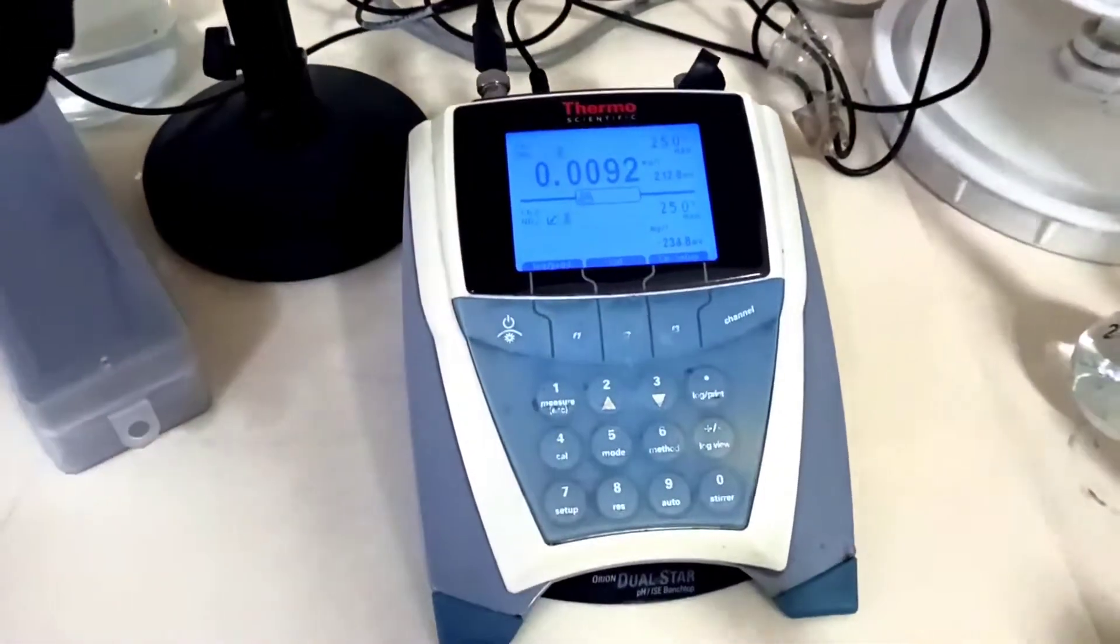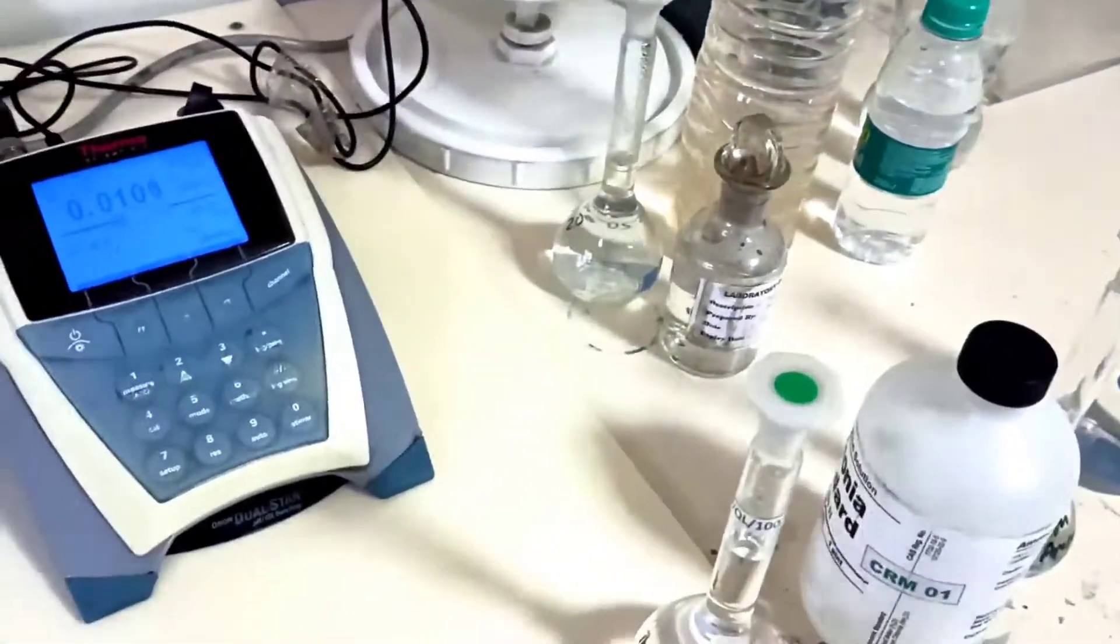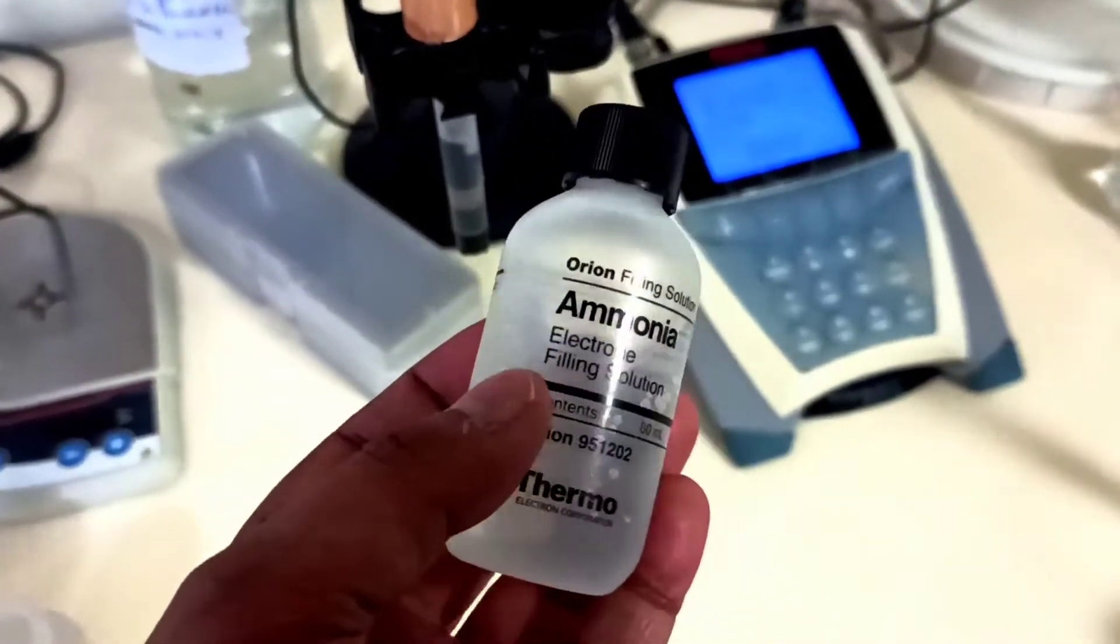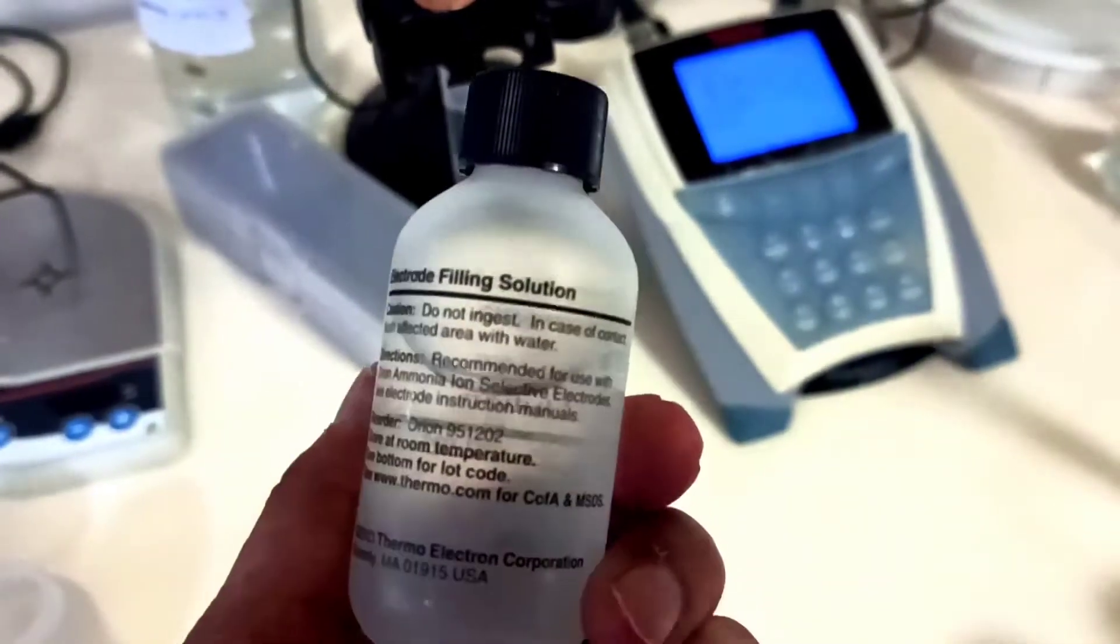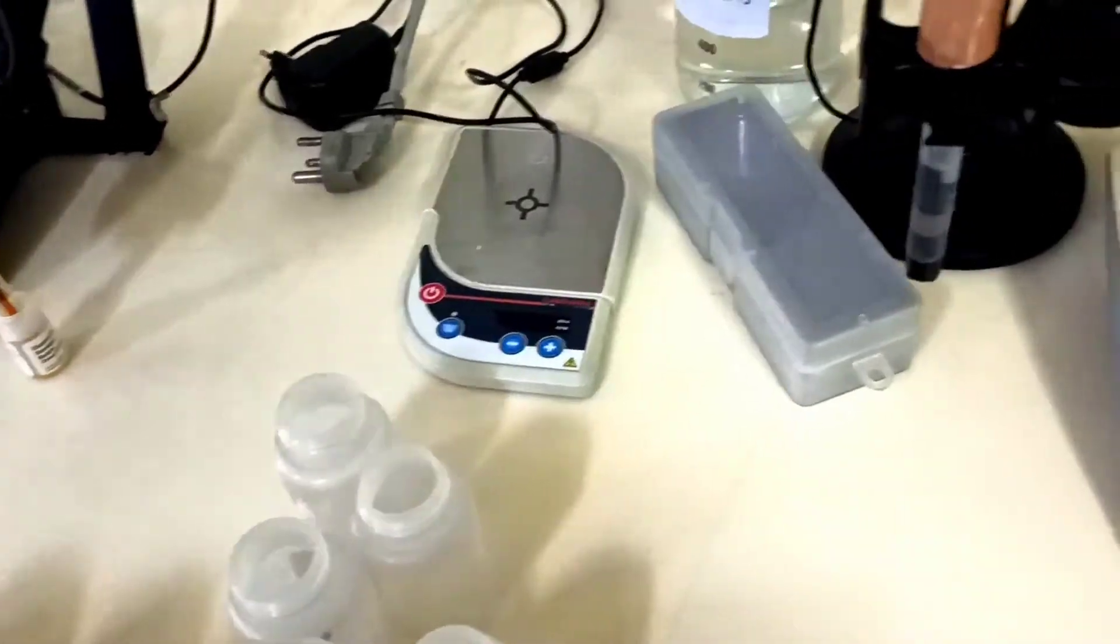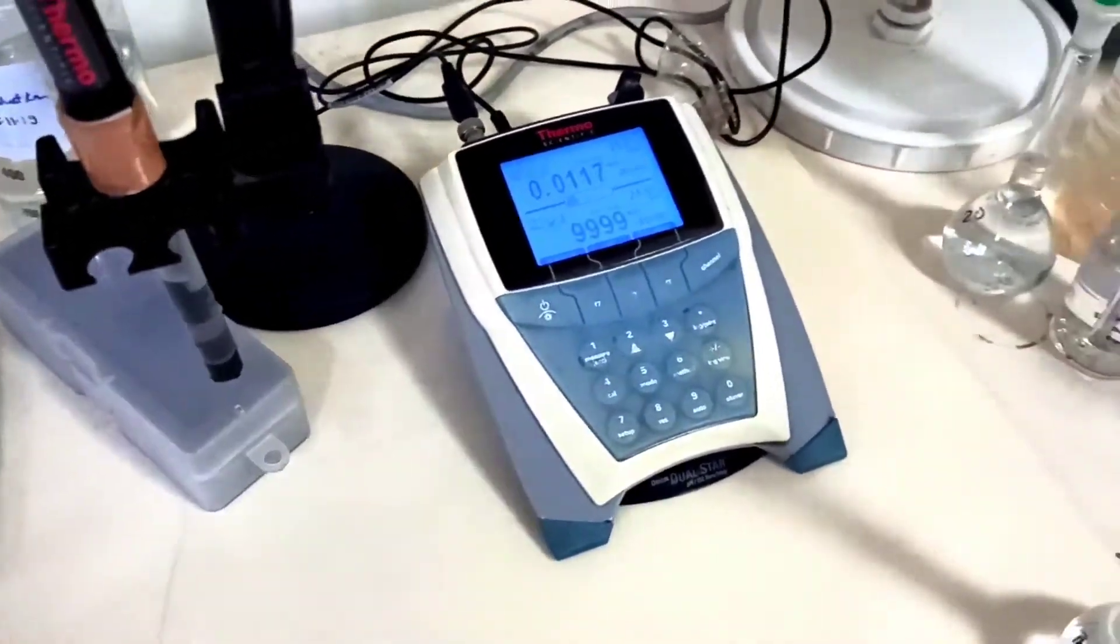In front of me you see the whole setup of the ion meter. It is attached with the ion selective electrode for ammonia. First of all, you see the ammonia electrode filling solution. We will show you how to fill the electrode filling solution in the ammonia electrode. This is the whole setup for calibration of the ion meter.